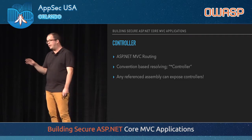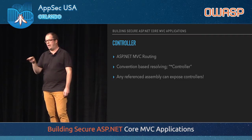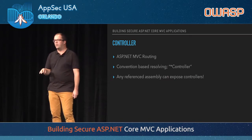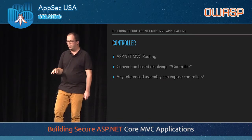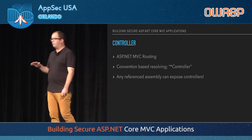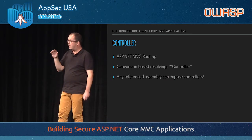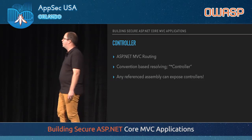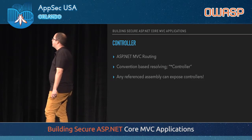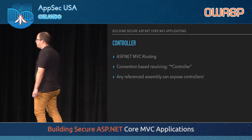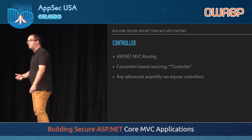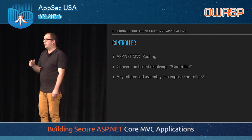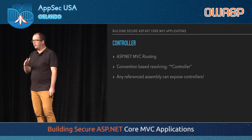Any assembly used inside your app can expose controllers — if there's a class ending with 'Controller,' it will be exposed due to convention-based discovery. It's good to limit this. Within ConfigureServices, you can grab the application parts manager, which resolves all controllers, and limit it — for example, only allowing specific namespaces to deliver controllers.